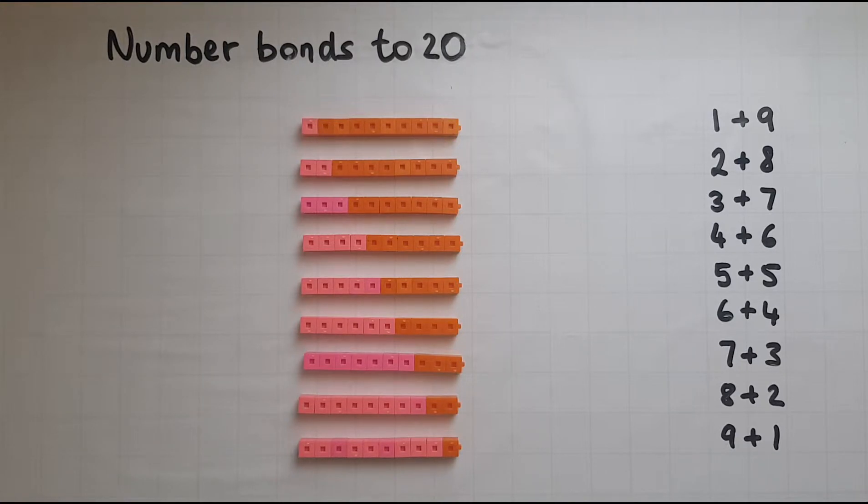So as I have these already from the number bonds to 10, we had 1 and 9 to give us 10, 2 and 8, 3 and 7, 4 and 6, 5 and 5, 6 and 4, 7 and 3, 8 and 2, 9 and 1.